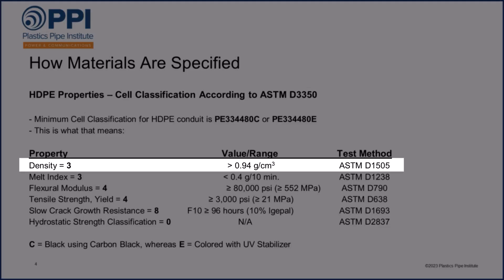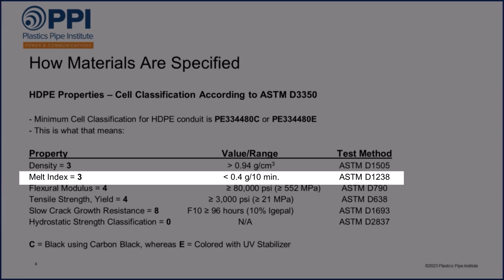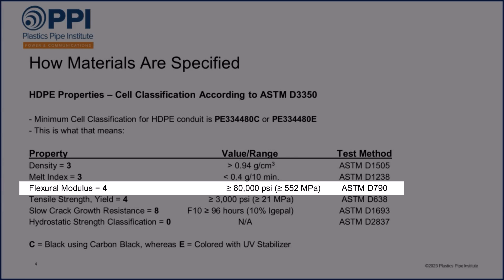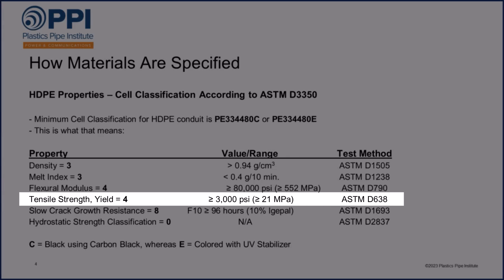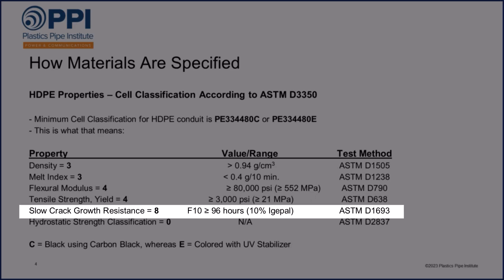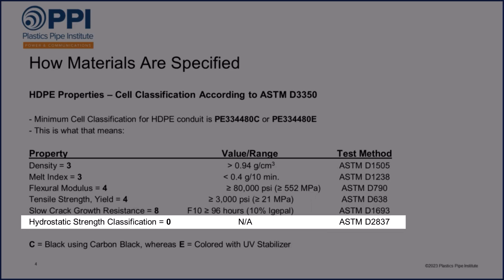The first digit refers to density, the second to melt index, the third to flexural modulus, the fourth to tensile strength at yield, the fifth to slow crack growth resistance, and the sixth and final digit refers to the hydrostatic strength classification.